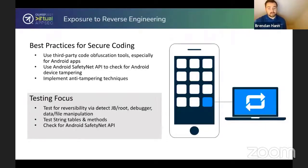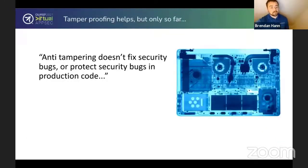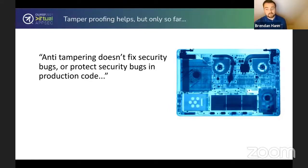To harden your app against reverse engineering, use third-party code obfuscation tools — specifically for Android apps, as iOS has a bit more security built in, though you should focus on this for both operating systems. Android also has the SafetyNet API, which you can use to check for device tampering. When testing, look for reversibility via jailbreak/root, debugger, and data or file manipulation. Note that tamper proofing helps but only so much — it won't fix security bugs in production. For example, if you have insecure network connections, tamper proofing won't protect from those attacks, but it will help protect from reverse engineering.